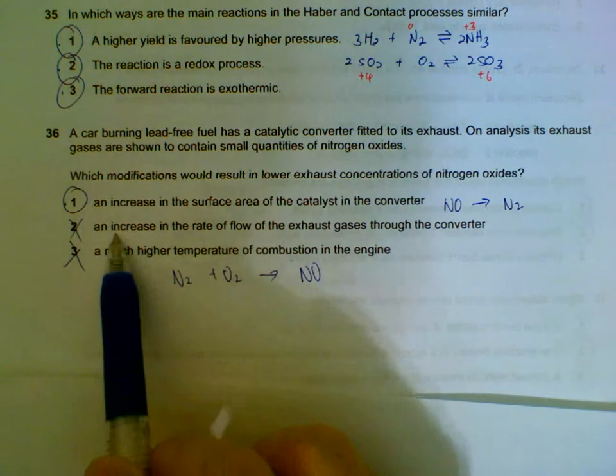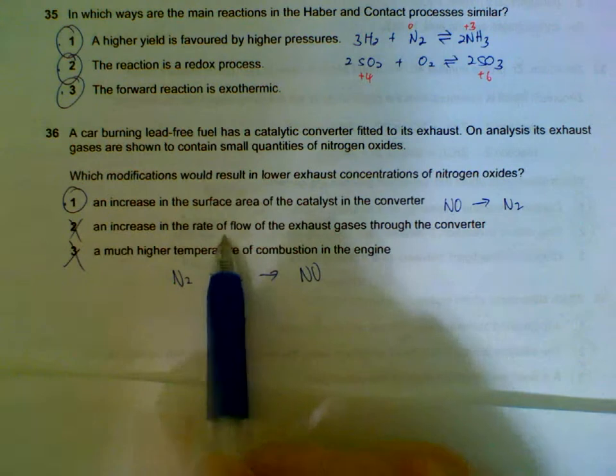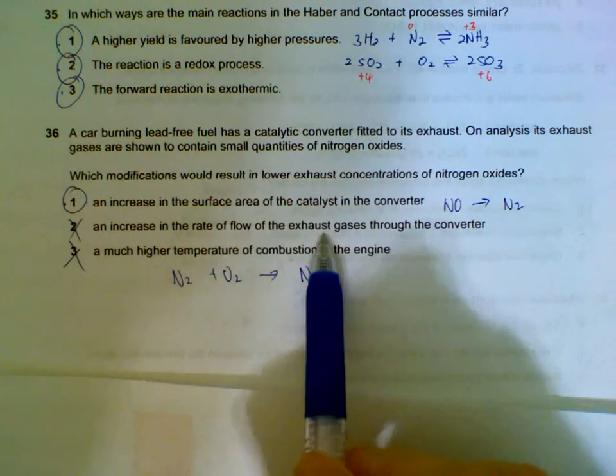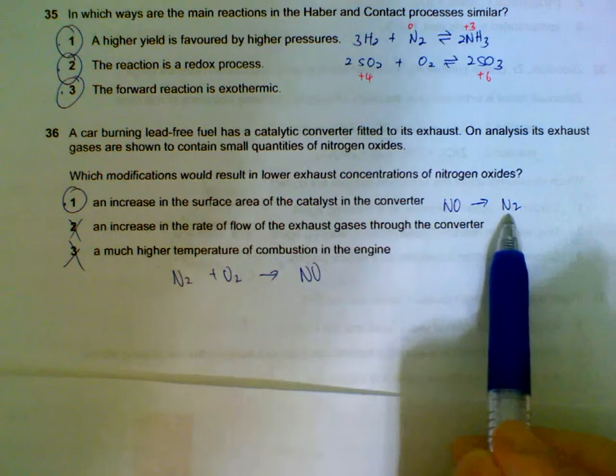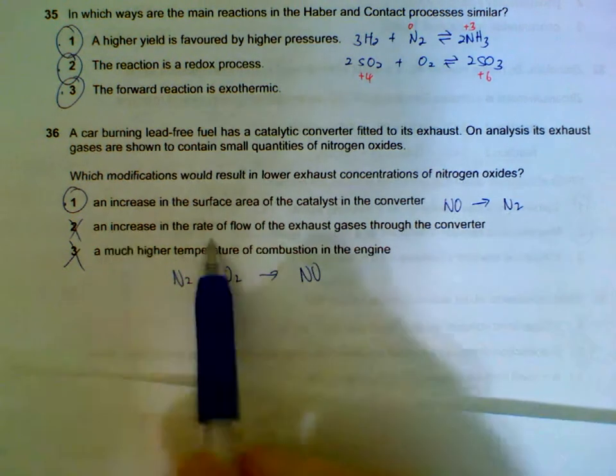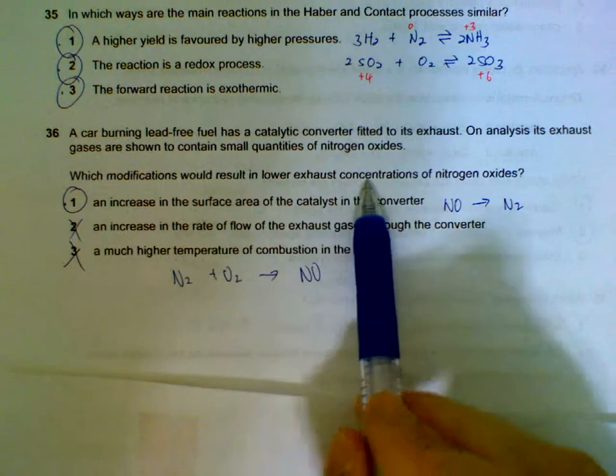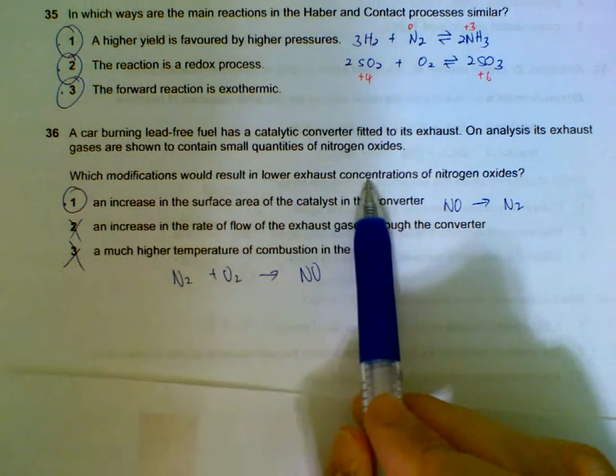2. If we increase the rate of flow through the converter, the gas moving too fast through the converter will have less chance of reacting and then we will have less chance of going back to nitrogen gas elements. So increasing the rate, we will actually get higher concentration of nitrogen oxides formed.